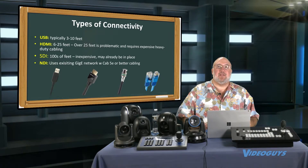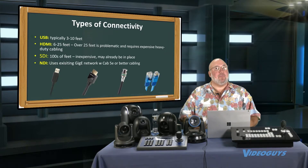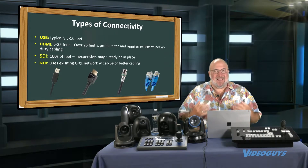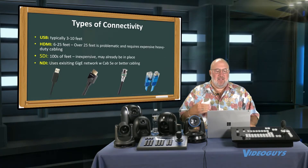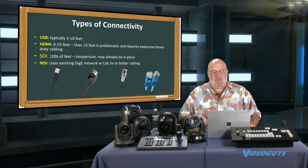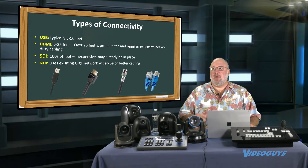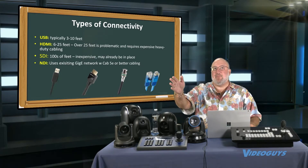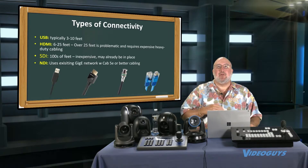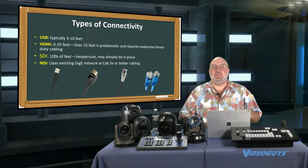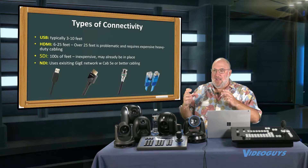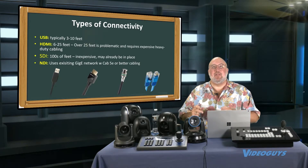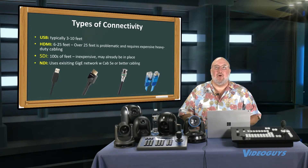The other technology that's come out — we're really going to talk about it a lot in the next show — is NDI. NDI uses your existing gigabit network with Cat 5e or better cabling. It allows you to take the video from a camera to a mixer, and also see that video on any other network port on the network with a decoder.